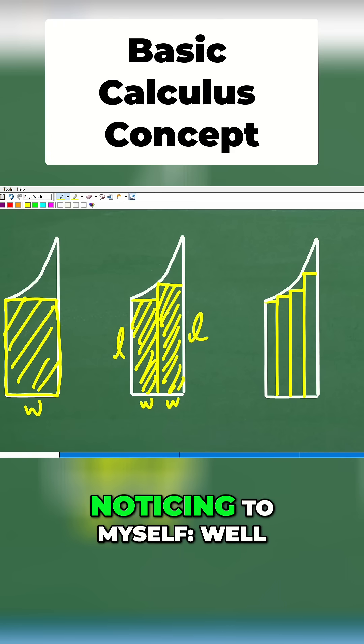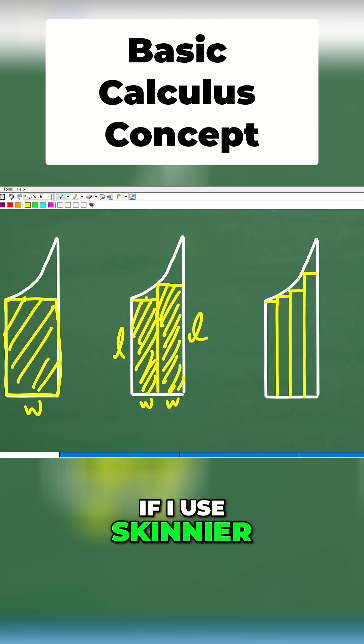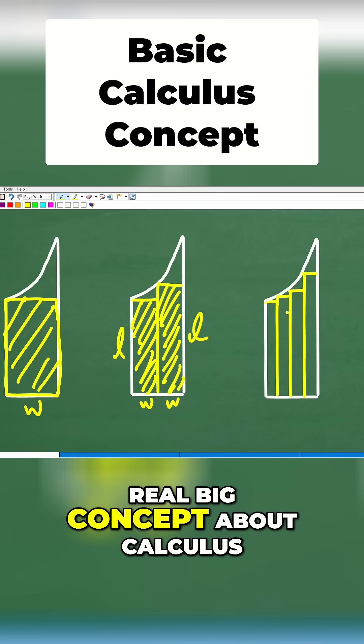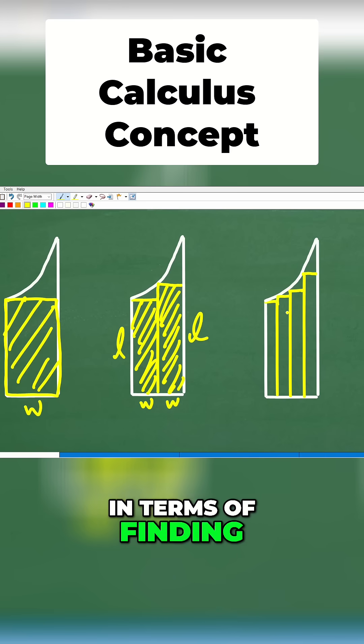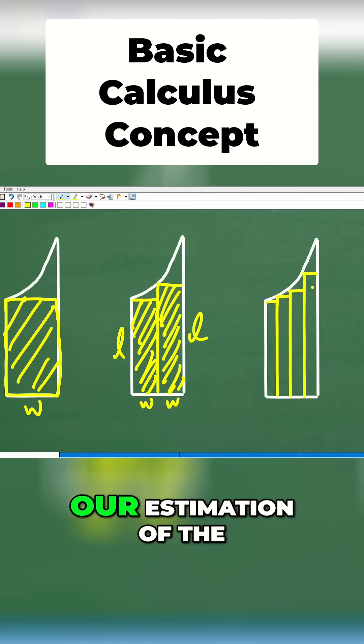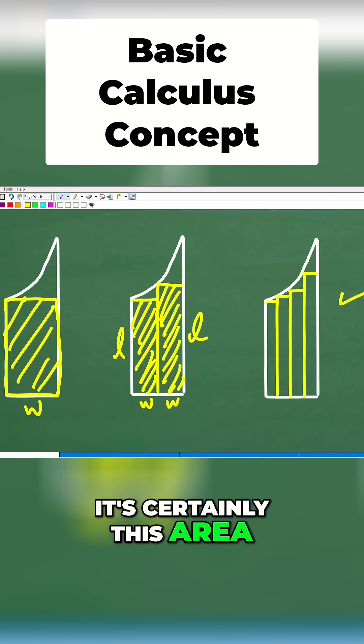So I'm noticing to myself, well listen, if I use skinnier little rectangles, I can get a better estimation of the area. And this is a real big concept about calculus, in terms of finding the area of figures where we don't have formulas. If we could find and add up the area of smaller rectangles, our estimation of the area of this entire figure gets better. So right here, this is pretty good. It's certainly this area estimation is much better than this, but how can we even make this better?